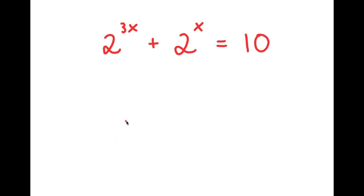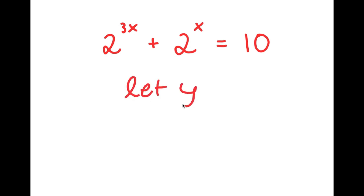So in this problem, I have 2 to the power of 3x plus 2 to the power of x is equal to 10. I'm going to first start by letting y equal 2 to the power of x.